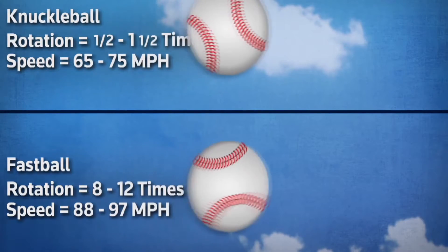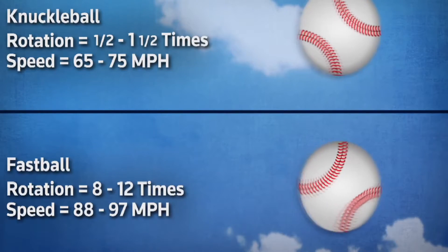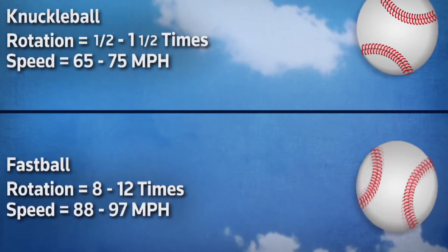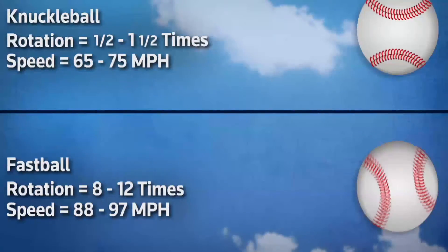As you can see, a fastball has a rotation of maybe 8 to 12 times whereas a knuckleball has maybe 1 to 1.5 times.